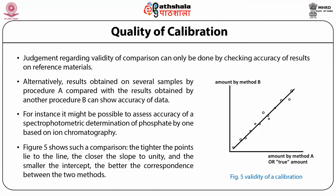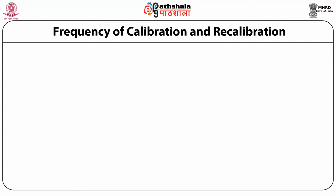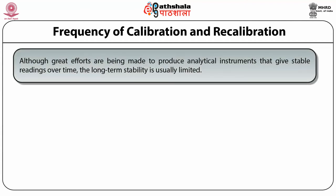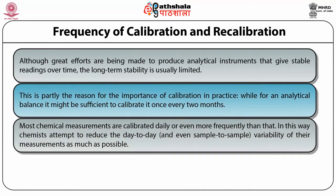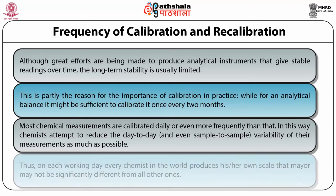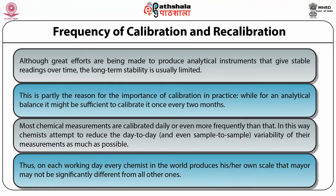The curve is commonly called the recovery function curve. Regarding frequency of calibration and recalibration: although great efforts are being made to produce analytical instruments that give stable readings over time, long-term stability is usually limited. This is partly the reason for the importance of calibration in practice. While for an analytical balance it might be sufficient to calibrate it once every two months, most chemical instrument measurements are calibrated daily or even more frequently. In this way, chemists attempt to reduce the day-to-day variability of their measurements as much as possible.